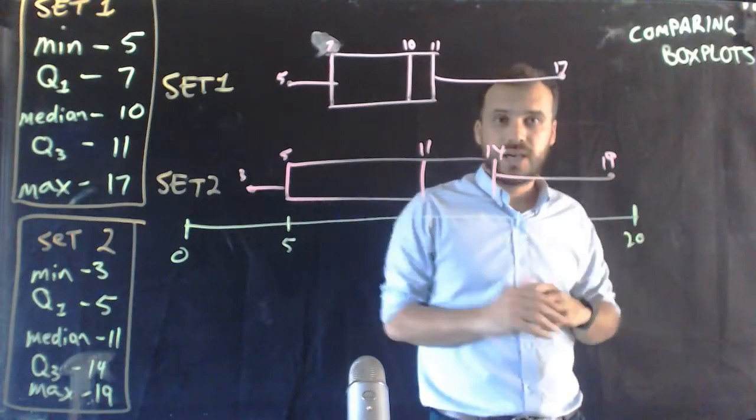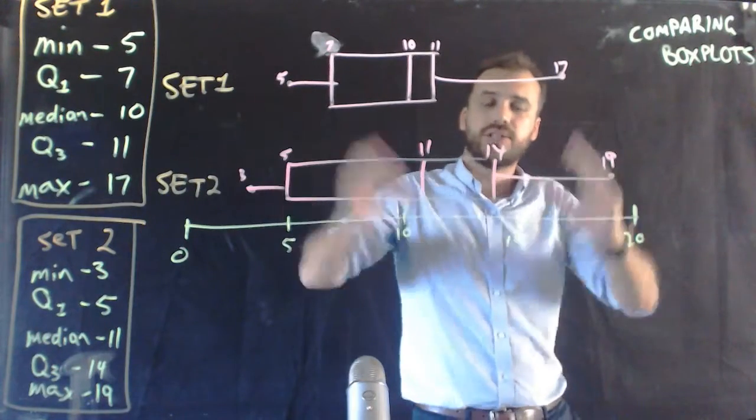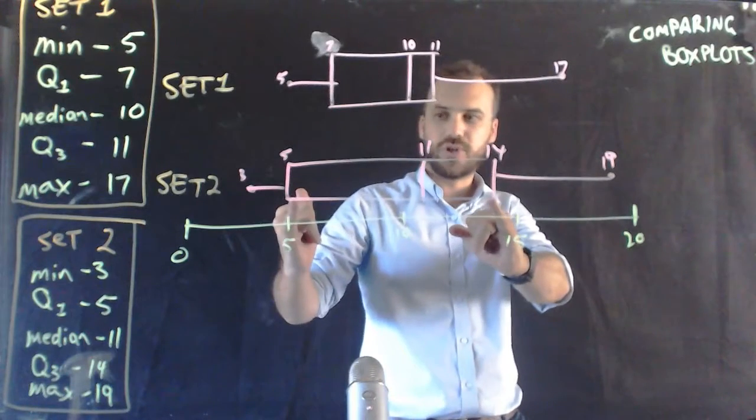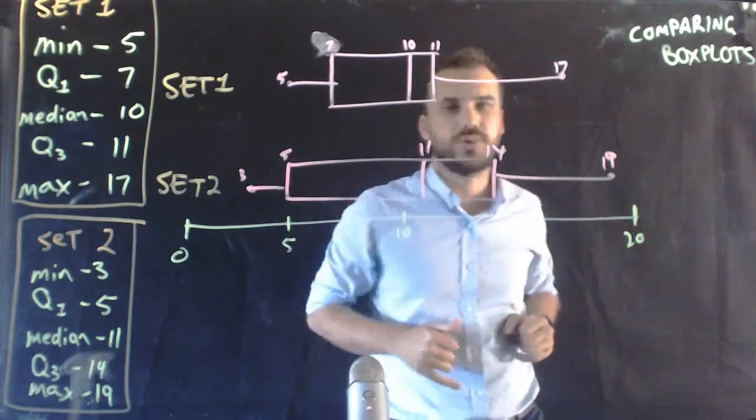So whichever teacher here has low-performing students and high-performing students, set one is slightly more bunched up, talking about range. We can also see that set two has a larger interquartile range, because this is our interquartile range compared to this interquartile range.